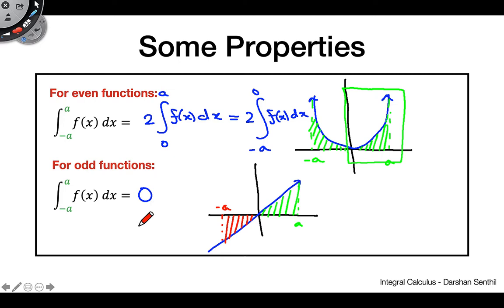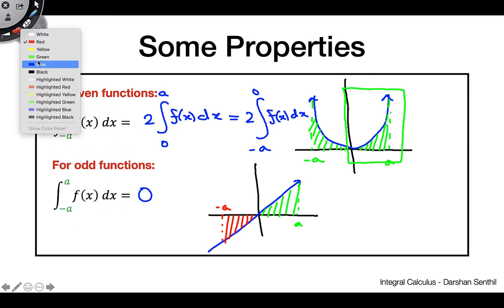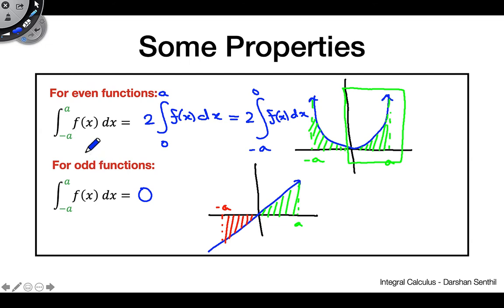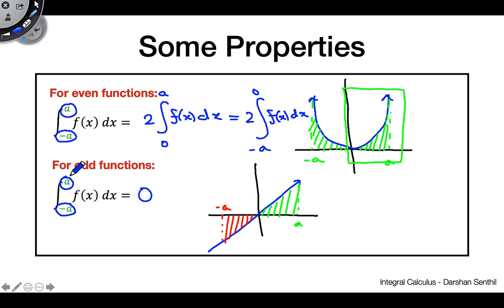One important caveat: both the even and odd function properties only hold when the bounds are symmetric — that is, from −a to a. If your bounds are something like 3 to 2, the symmetry breaks down and these properties will not apply. So your bounds must be symmetric for these properties to work.